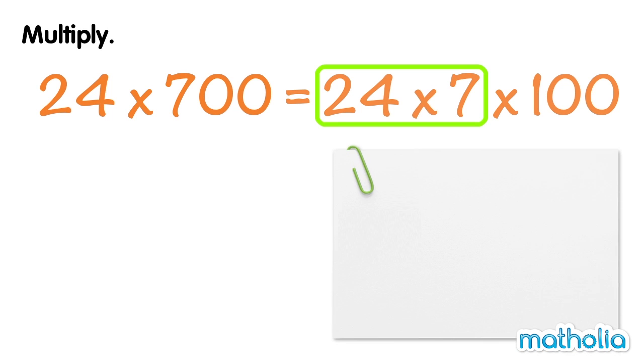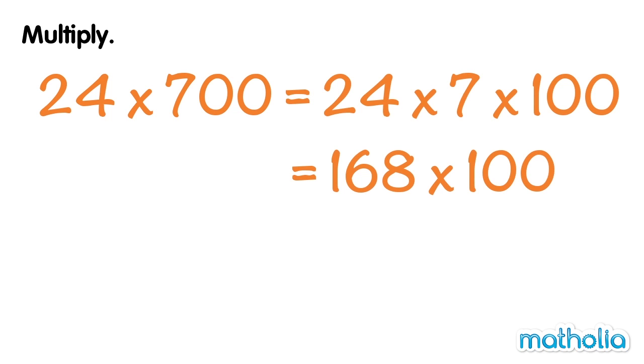By multiplying in columns, we see that 24 times 7 is equal to 168. 168 times 100 is equal to 16800. So 24 times 700 equals 16800.